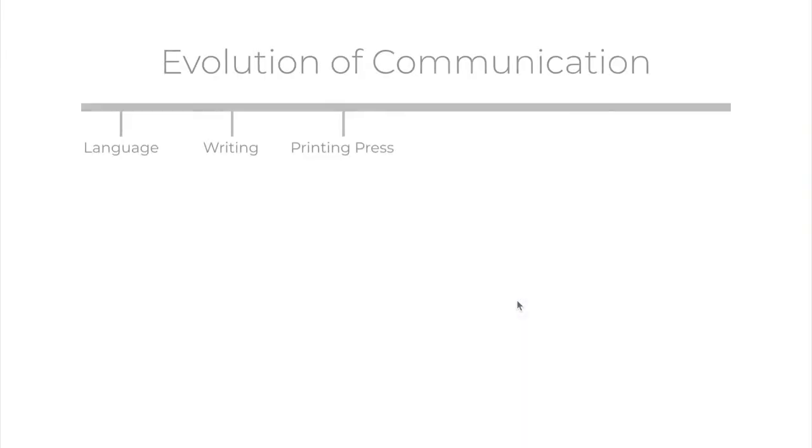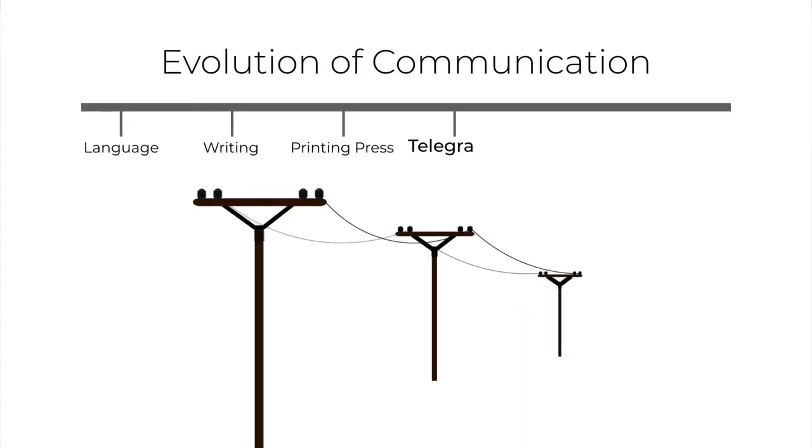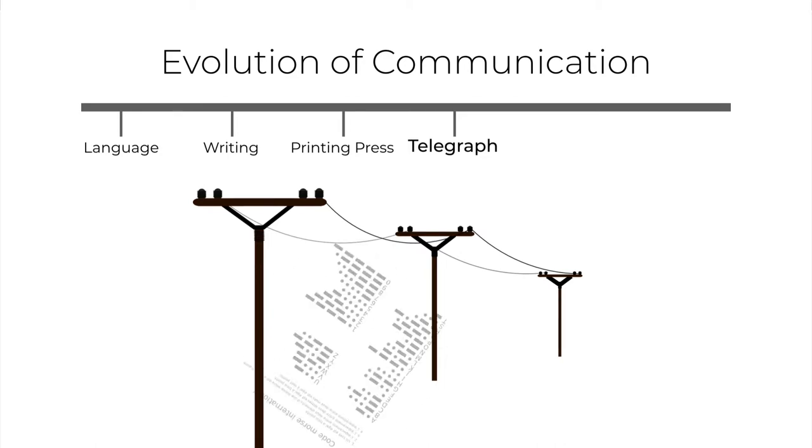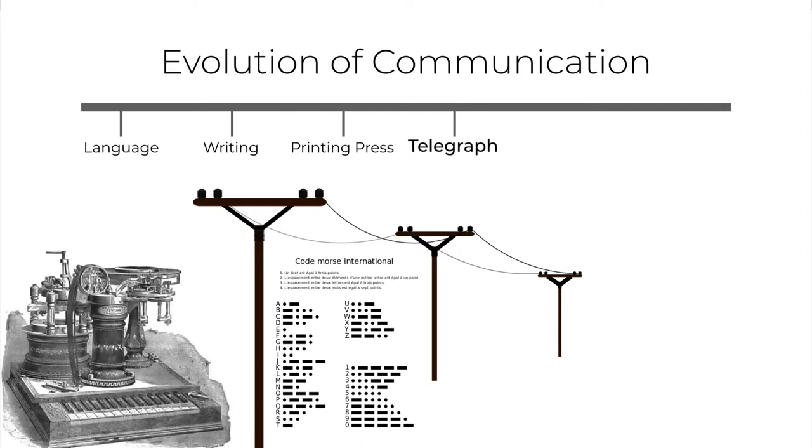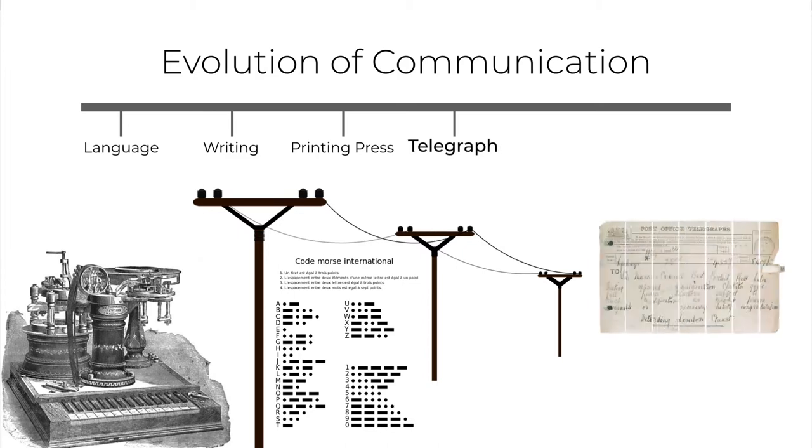Electricity led to the invention of telegraph. Information coded into Morse code—dots and dashes—could be relayed across long distance using electricity wires. Telegraph allows instant dissemination of information across space but not across time. Also, only very short messages can be communicated.